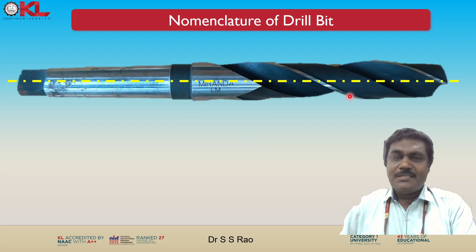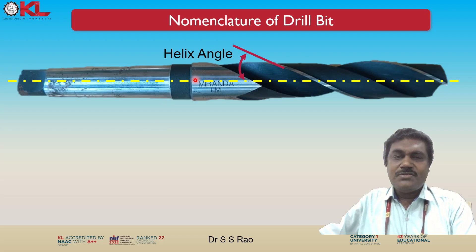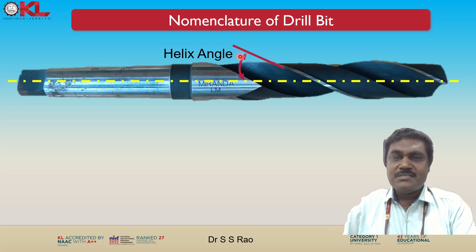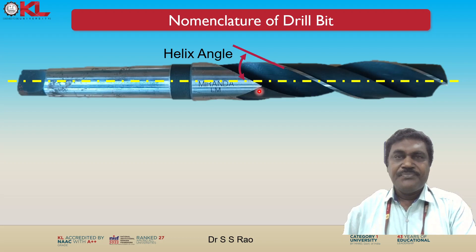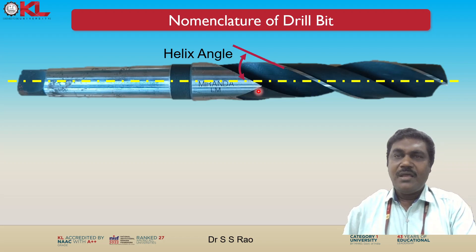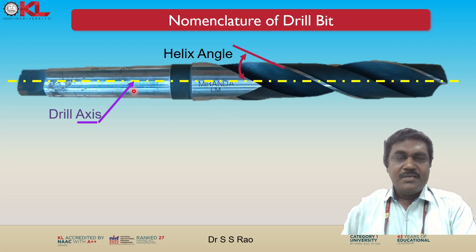Now you can see the axis of the drill bit and the helix angle. The helix angle refers to the angle formed by the flutes as they spiral around the body of the drill bit. It plays a crucial role in chip evacuation, as a proper helix angle allows for efficient material removal and reduces the risk of clogging.